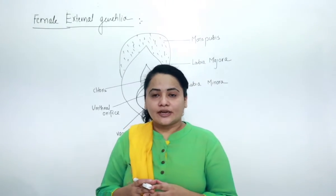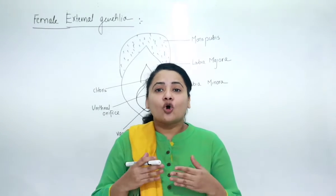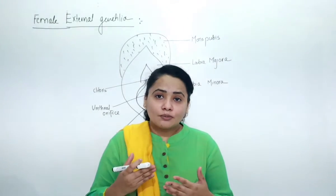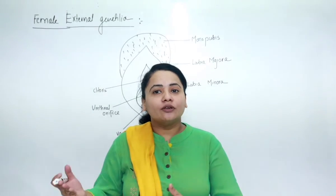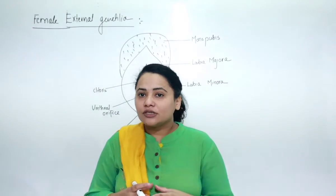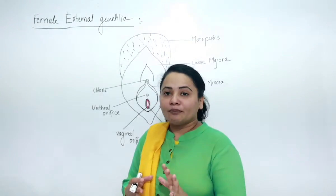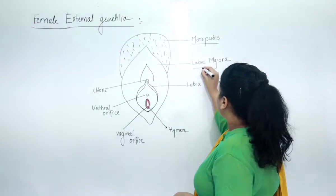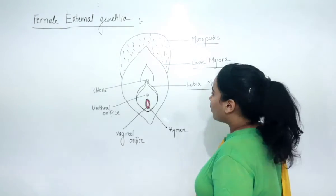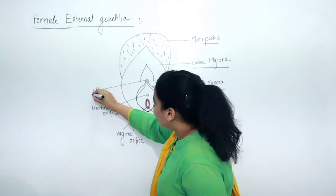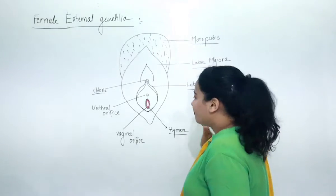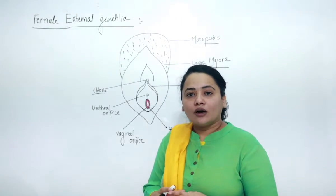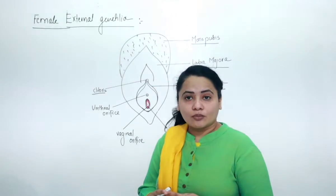What is external genitalia? External genitalia are the organs located on the surface of the female's body associated with the reproductive system. If we talk about it in detail, external genitalia is mainly composed of mons pubis, labia majora, labia minora, clitoris, and hymen.